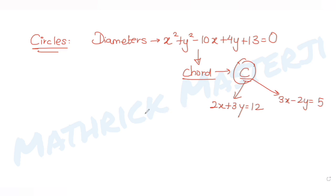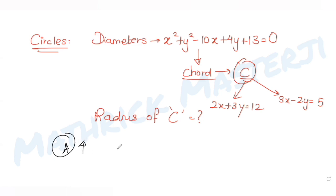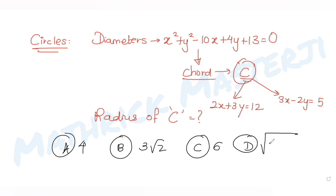The question is asking us to find the radius of this circle C. The answer choices given are: 4, 3√2, 6, and √20. We need to figure out which one is correct. Let's try to solve this question.